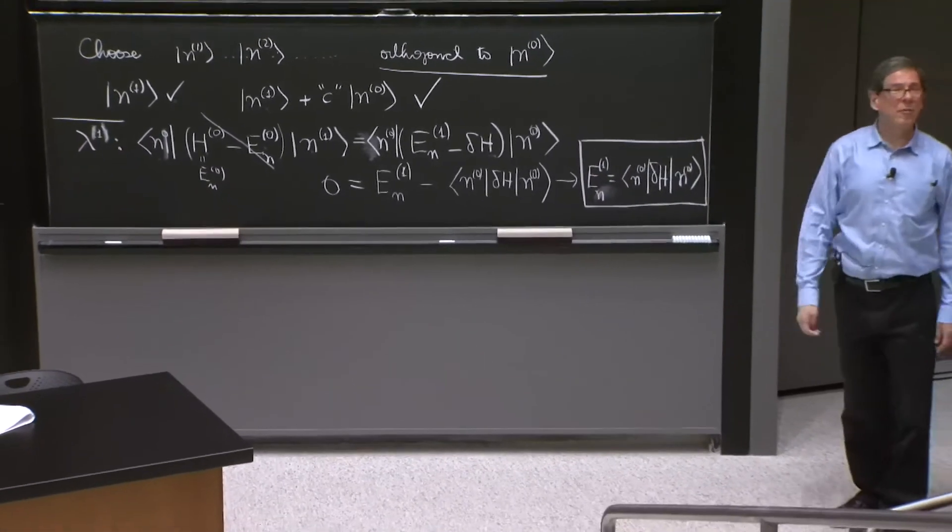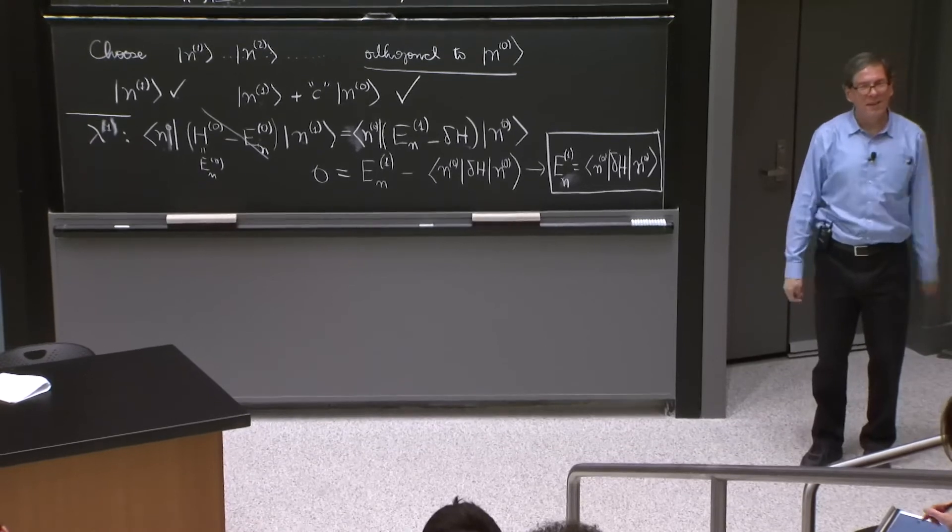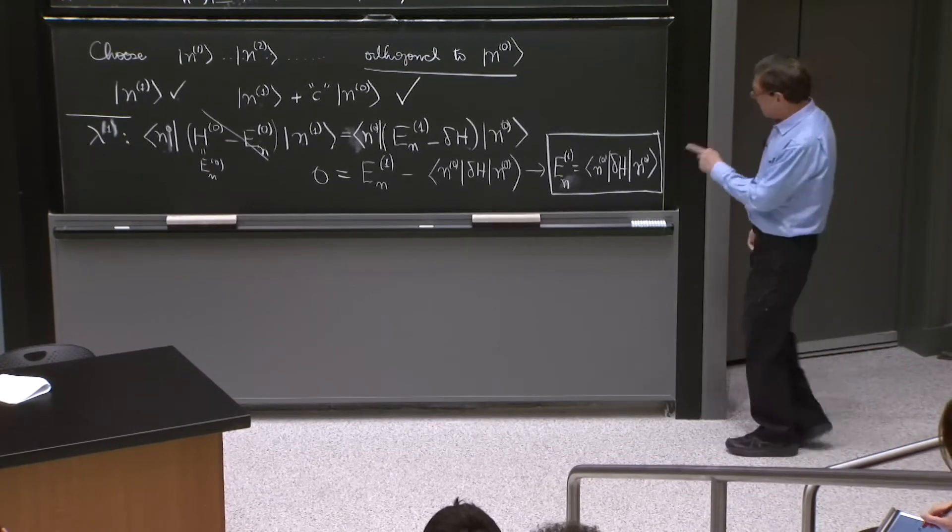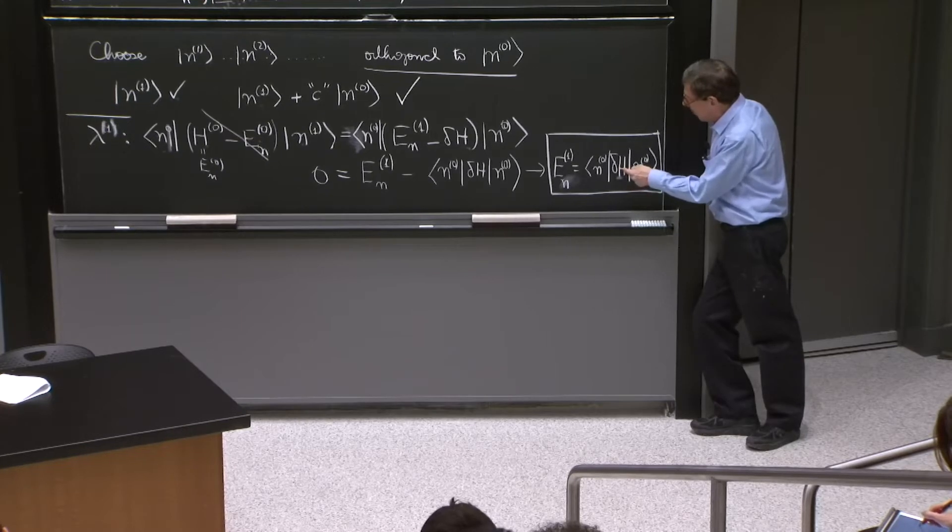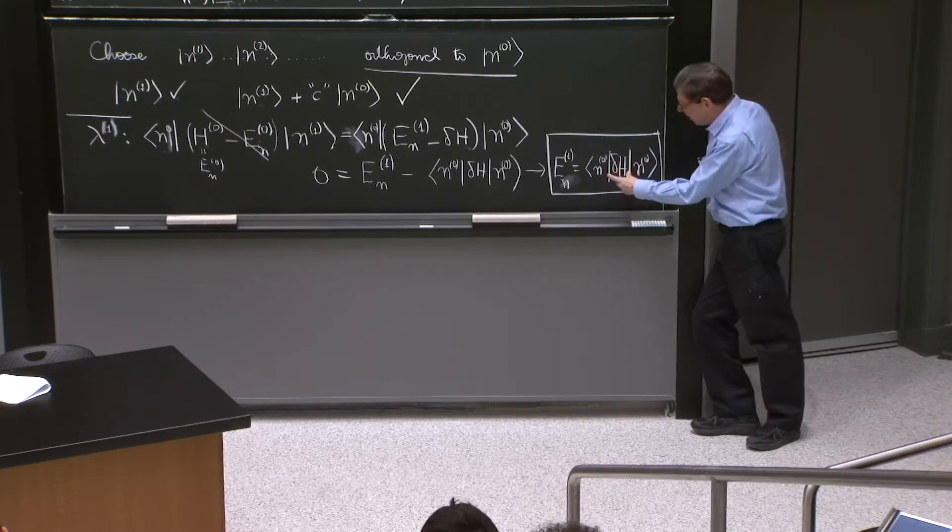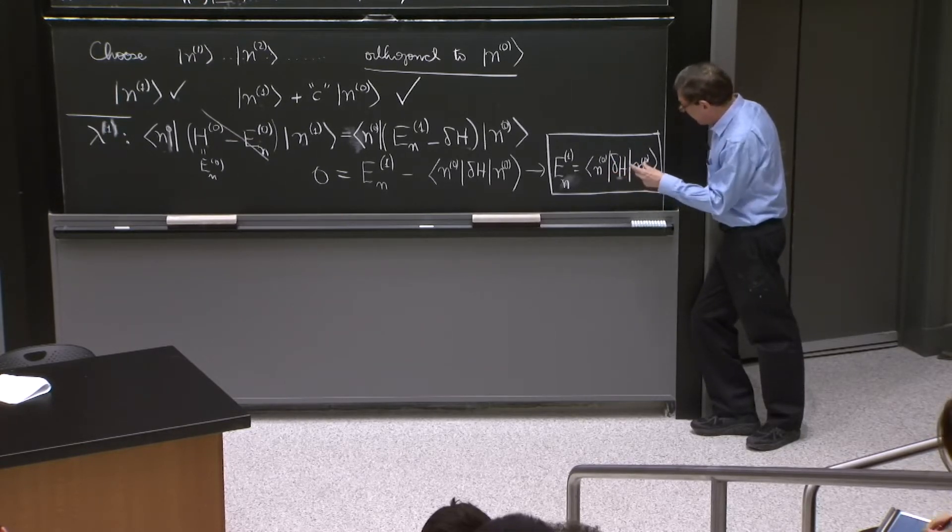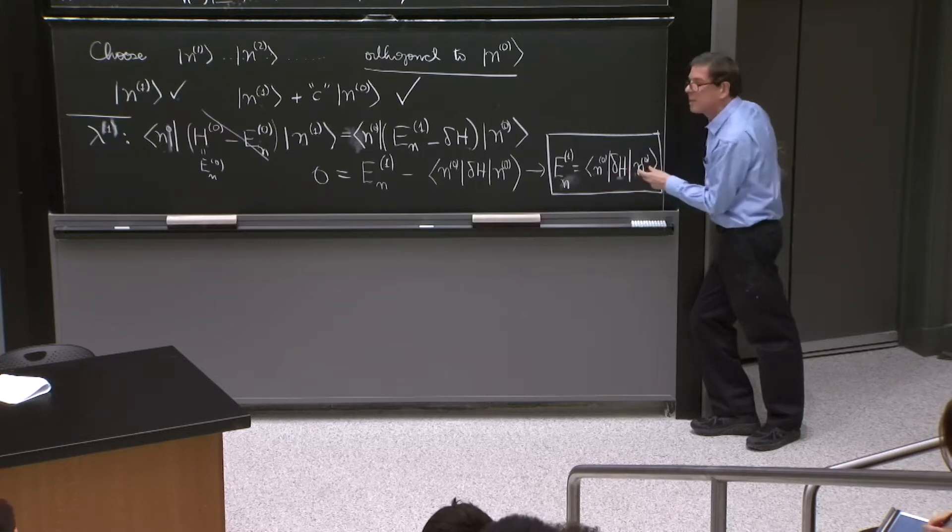So the first correction to the energy is obtained by finding the expectation value of the perturbation in the unperturbed state.